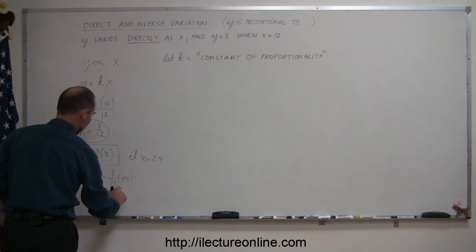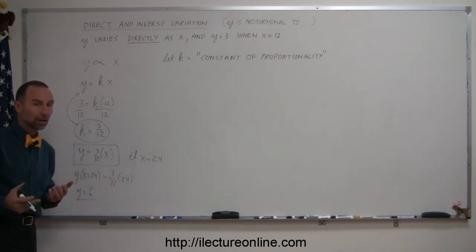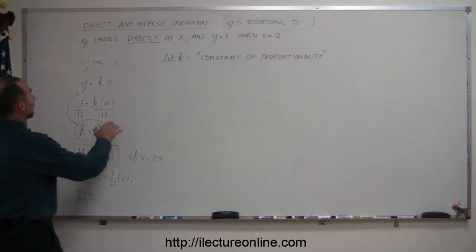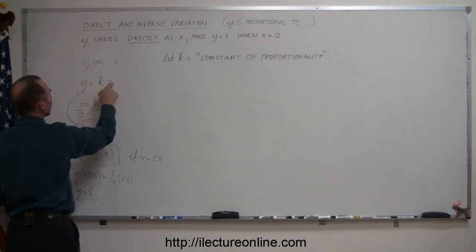Now, we can apply that to something else. Now, if you give me a different value of x, I will give you a different value for y. So for example, if x is equal to 24, then we can find the corresponding y. So y, when x equals 24, is equal to 3 over 12 times 24. Of course, 24 divided by 12 is 2. That means y is equal to 6.